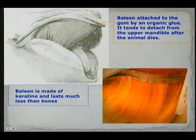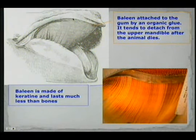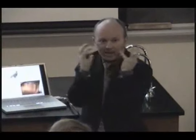There's another thing that makes this finding very remarkable. Baleen is attached to the upper gum with an organic glue — it is not rooted into the maxilla like our teeth are. There are no roots going into the bone, just an organic component keeping baleen attached to the gum. Once the animal dies, that organic glue decays and the baleen detaches and drifts away and decays.